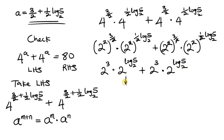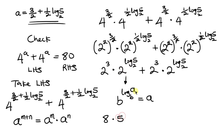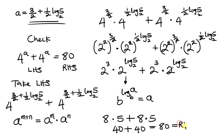Now we apply the logarithm law that says when a base is raised to the log of a number with the same base, the result is that number. So 2 to the 3 is 8, times 2 to the log 5 base 2 — since the bases match — gives 5. So we have 8 times 5 equals 40, plus 8 times 5 equals 40. And 40 plus 40 gives 80, which equals the right-hand side. So our result, a equals 3 over 2 plus 1 over 2 log 5 base 2, is correct.